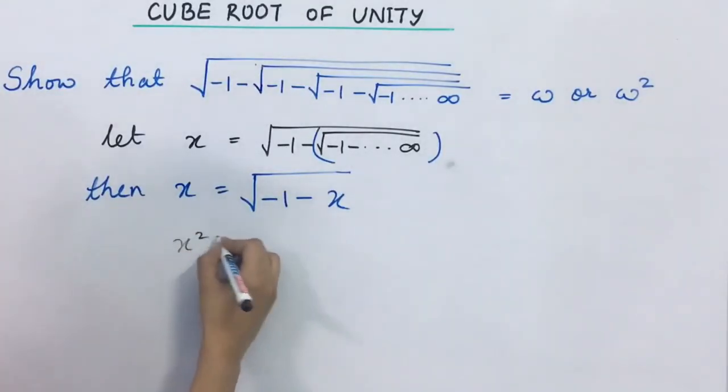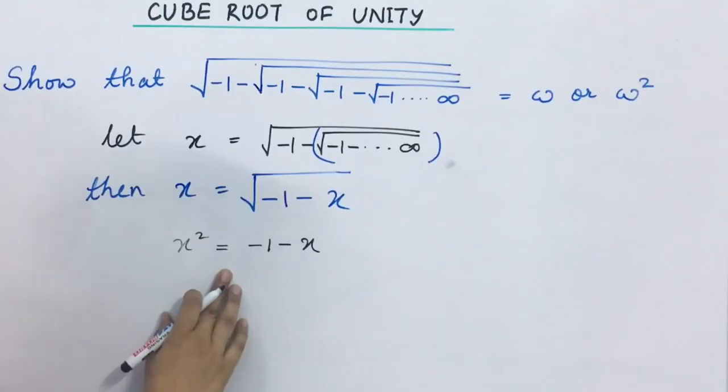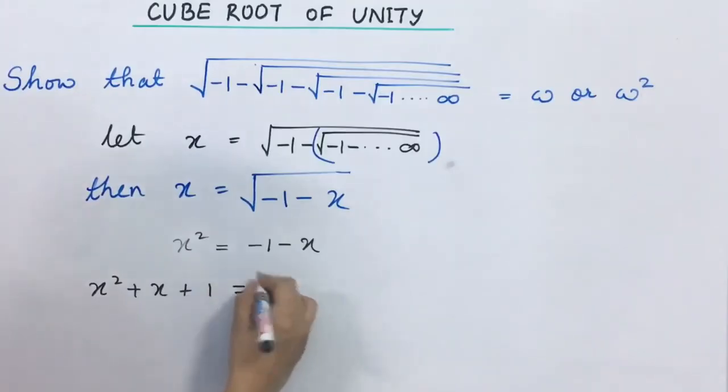Squaring both the sides we get x square equal to minus 1 minus x. Rearranging, this equation becomes x square plus x plus 1 equal to 0.